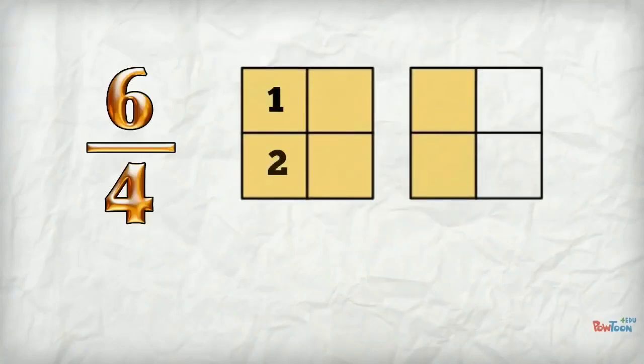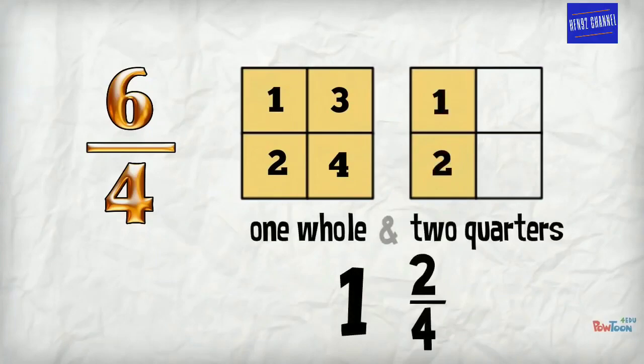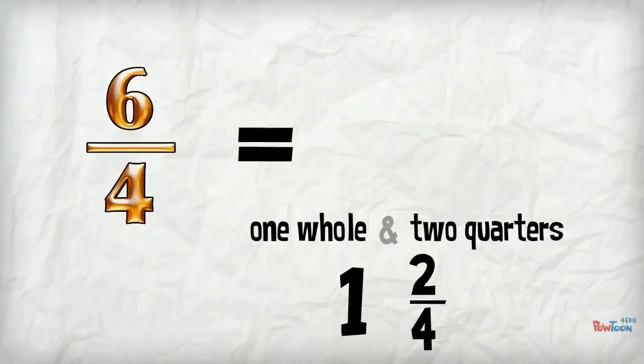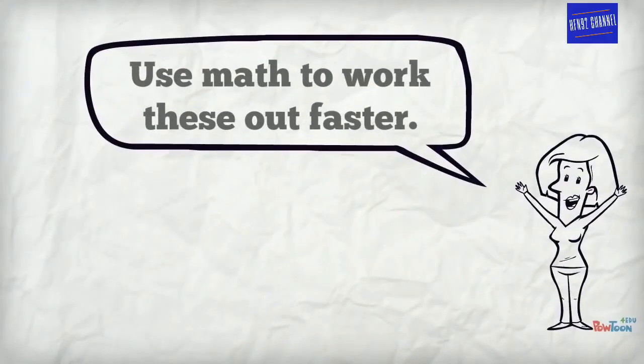Six over four means six quarters. Four quarters is one whole and we have two quarters left over. So, six over four equals one and two quarters. We could do these problems using diagrams like I just showed you. But if we use math, we can work them out much faster.